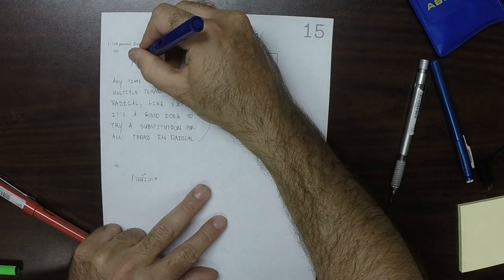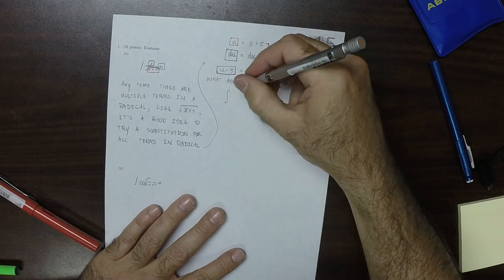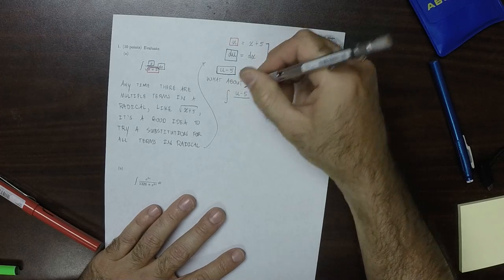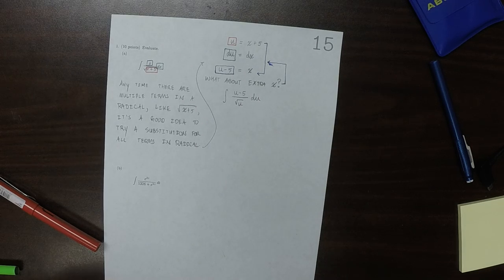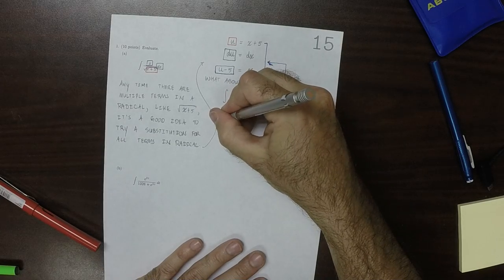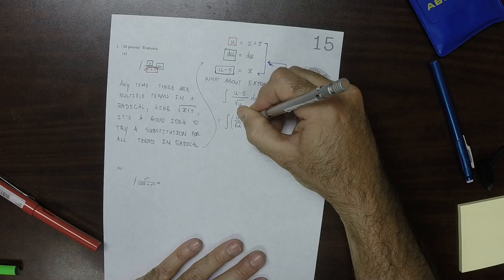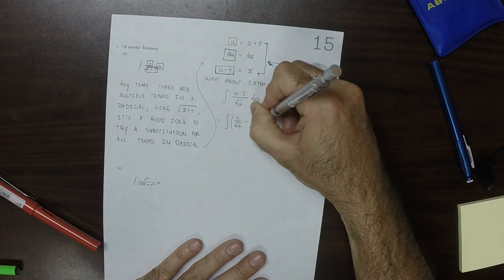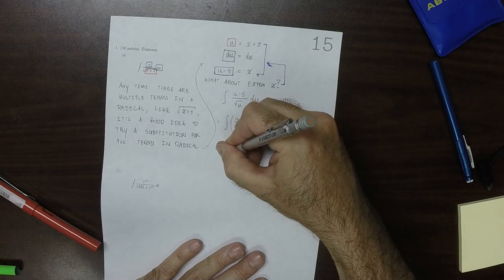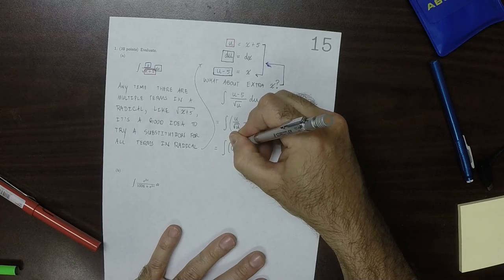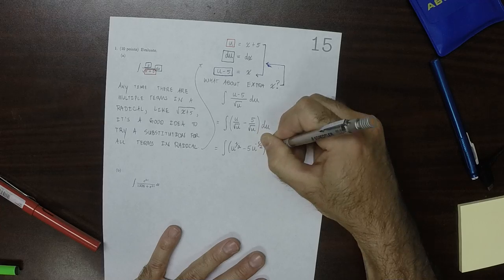So we're going to replace x with u minus 5. After doing that, square root u minus 5 over square root u du. And you might look at this one and say, it looks just as bad as the original. However, now we can do some algebra and say, well, this is u over square root u minus 5 over square root u, du, and then simplifying this further, this would be anti-derivative of u to one-half, because that first term simplifies in that way, and then minus 5 u to negative one-half du.